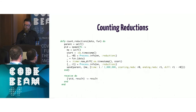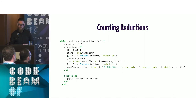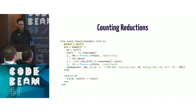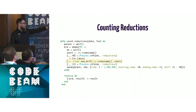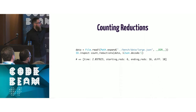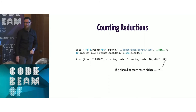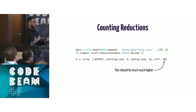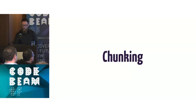We can measure this by writing a function that calls process_info to get reductions before and after calling the function, then sends the difference as a message to the parent. When we run our NIF, it takes 1.5 seconds but registers only 10 reductions. We can do much better than this.